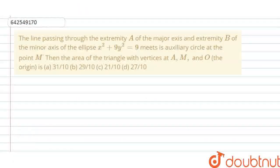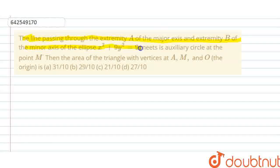Hello everyone. So the question is: the line passing through the extremity A of the major axis and extremity B of the minor axis of the ellipse x² + 9y² = 9, meets its auxiliary circle at the point M. Then the area of the triangle with vertices A, M, and O, where O is the origin — we have four options and we have to calculate the answer and select the correct option.